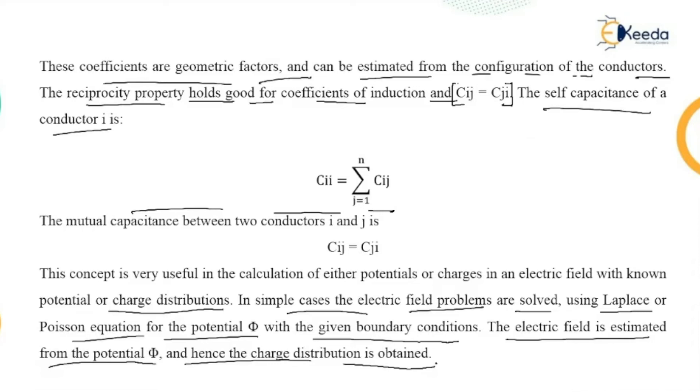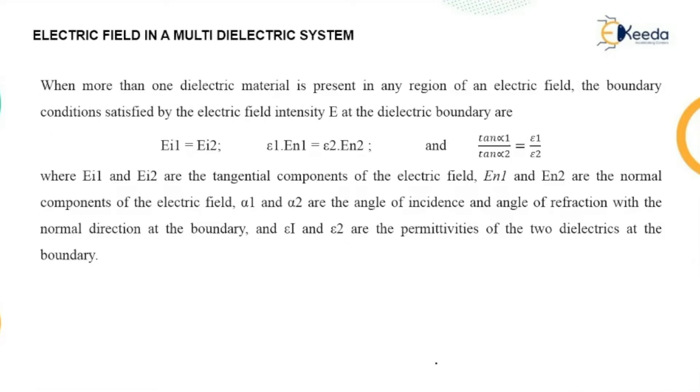So this is all about the analysis of electric field in a single dielectric system. Now let us understand the multi-dielectric system, that is mixed dielectric system. When more than one dielectric material is present in any region of the electric field, the boundary conditions satisfied by the electric field intensity E at the dielectric boundary are: